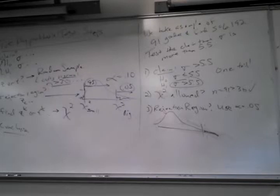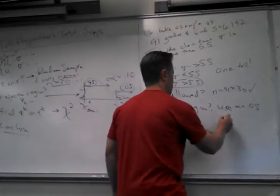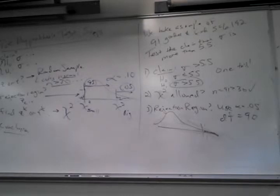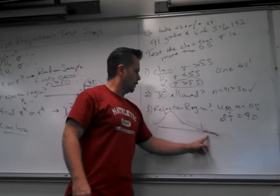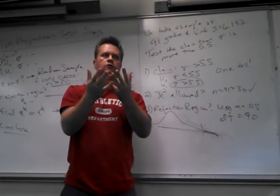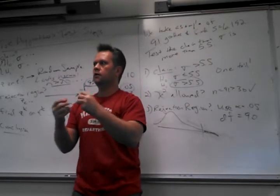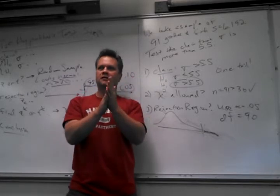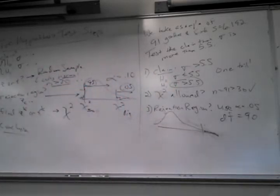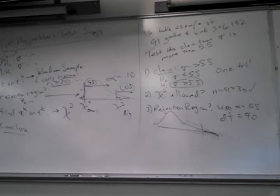Which column am I going to look at on the chi-square chart, and then we go down to degrees of freedom? The degrees of freedom is 90. Which column? If I want 0.05 and one tail up here on the right, I look at the 0.05 column - that's the amount of area to the right of it. The extra challenge of this chart is it's set up completely differently than the other charts. I want to look at 0.05 and degrees of freedom 90. The answer is 113.145.